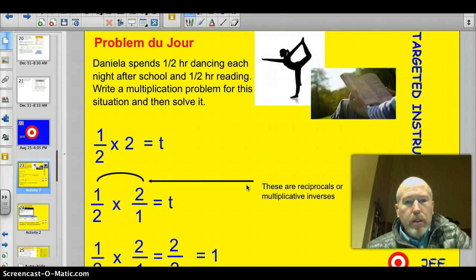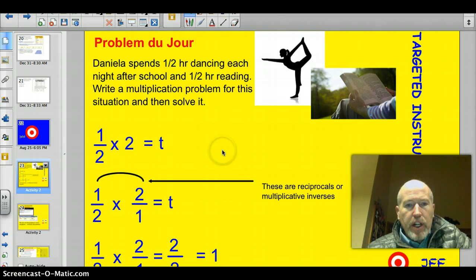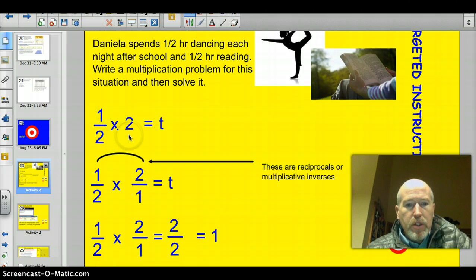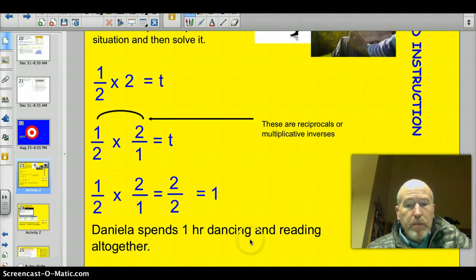Our problem du jour. Daniella spends a half an hour dancing each night after school and a half an hour reading. Write a multiplication problem to solve this situation and then solve it. So what we're going to do is find out how much time she spends. So we have 1/2 × 2 = t. So 1/2 times 2/1, that's what 2 is, is 2/1. I can multiply straight across like I did right down here. And I'm going to get 2/2, which equals 1.